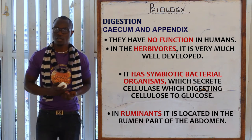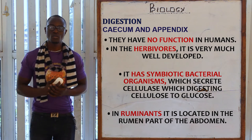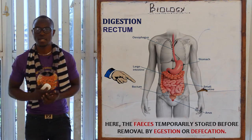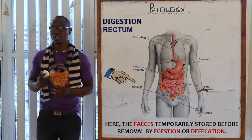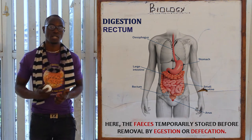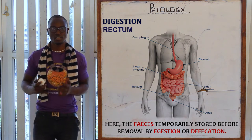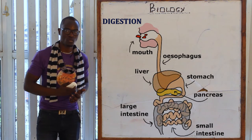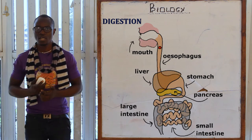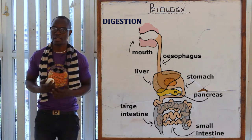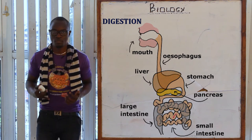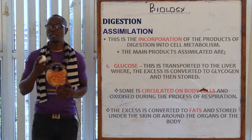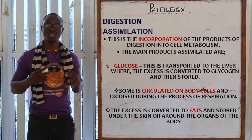In the rectum, feces are temporarily stored before removal by defecation. That is when feces are removed from the body. In digestion we began with ingestion, then digestion, and finally we complete with egestion, which is the removal of undigested food materials from the body.